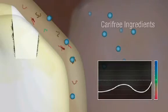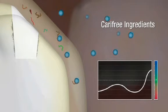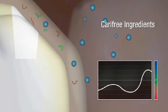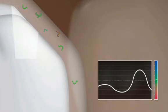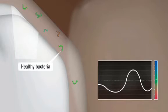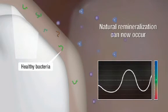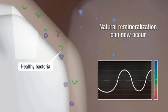The CaryFree products contain ingredients to remove the acidic biofilm and have highly elevated pH levels to restore and neutralize a healthy biofilm. This neutral pH will allow the bacteria to return to a healthy state and the natural remineralization process to occur.